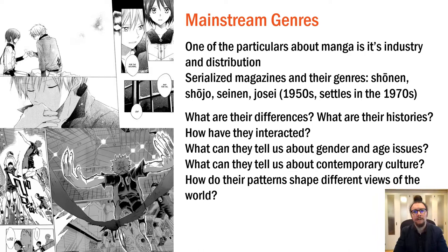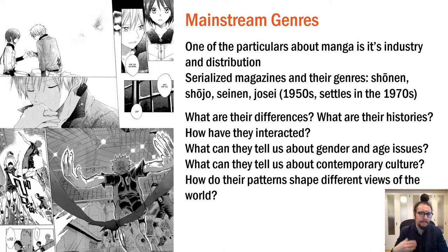These are what are generally called industrial genres, serialized in magazines. These include shonen (young boys' manga), shoujo (young girls' manga), seinen (young adult male manga), and josei (young adult women's manga). These are four of the larger categories among many others, and this system has been in place since the 1970s, beginning around the 1950s. What are their differences and how have they interacted? And since these are gendered and aged genres, what can they tell us about gender and age issues?